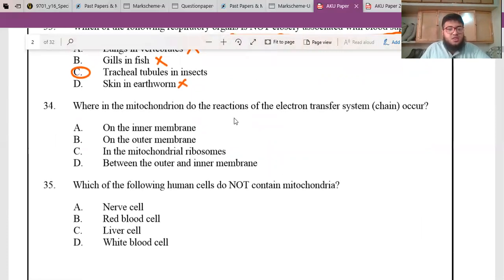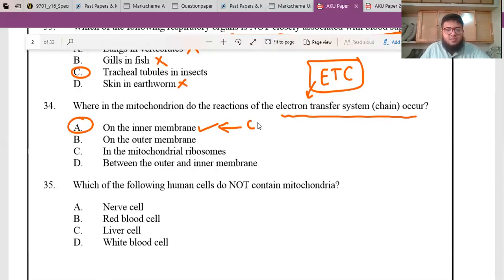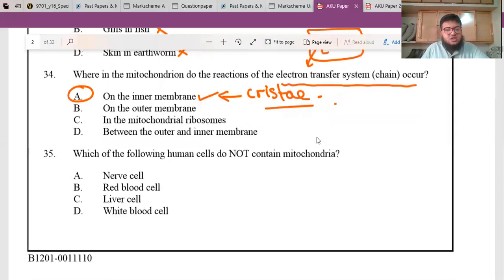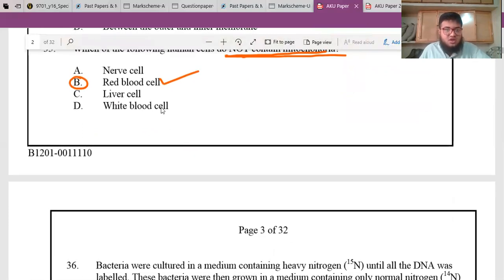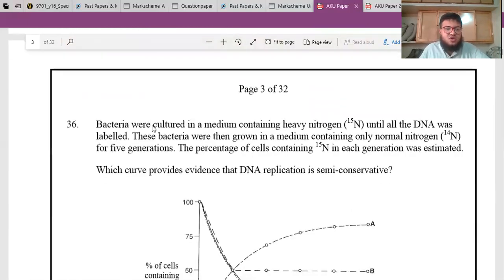Where in the mitochondria do the reactions of electron transport chain occur? If you remember oxidative phosphorylation, this happens in mitochondria's inner membrane, the cristae. Which of the following human cells do not contain mitochondria? This is red blood cells. This is MBBS theory part, you will hear about this in the beginning. Red blood cells do not have mitochondria.